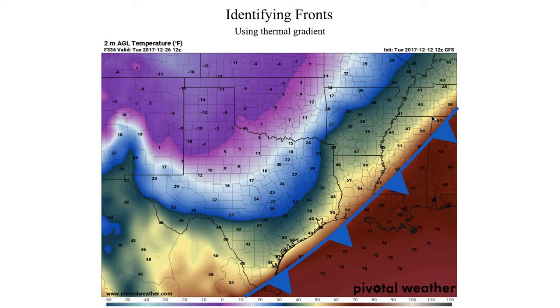There's a really sharp temperature gradient evident here. Typically when you draw the front based on the thermal gradient, you put the front right at the leading edge of the thermal gradient — right where the warm air becomes colder air. That's typically where we would draw the front. In this case it's most likely a cold front; the triangles point in the direction the front is moving. So our front would look something like this, right at the interface of the warm air and the cold air.